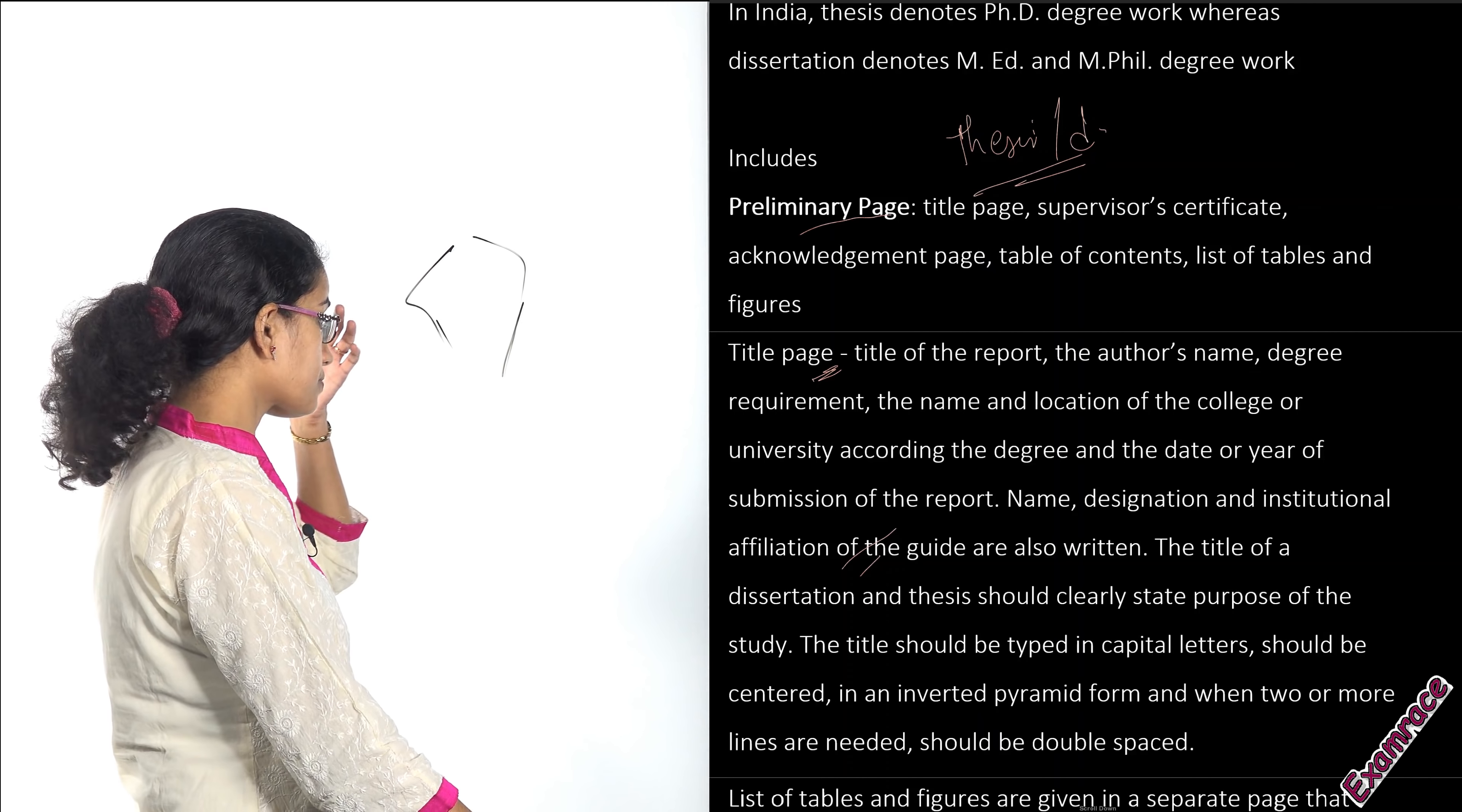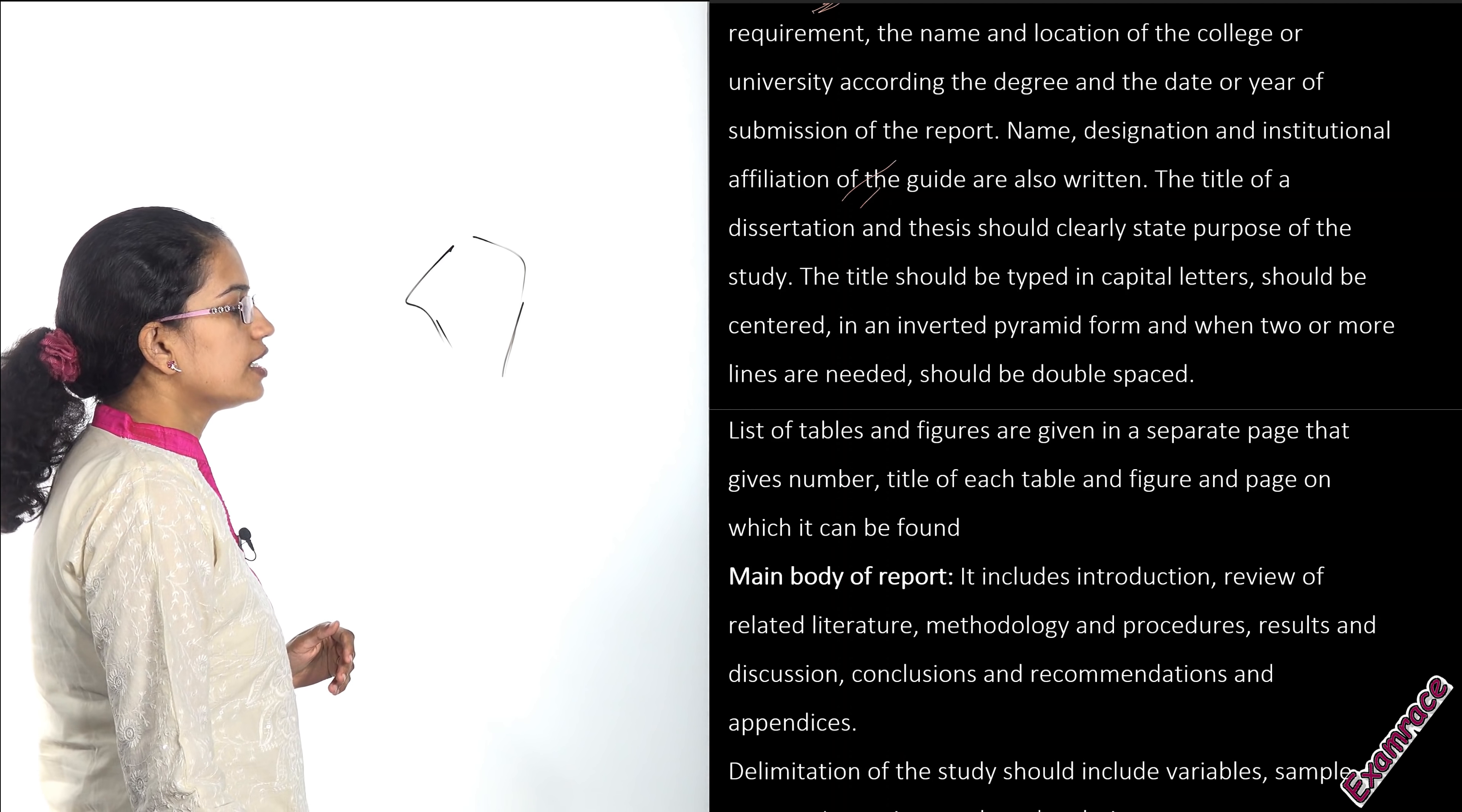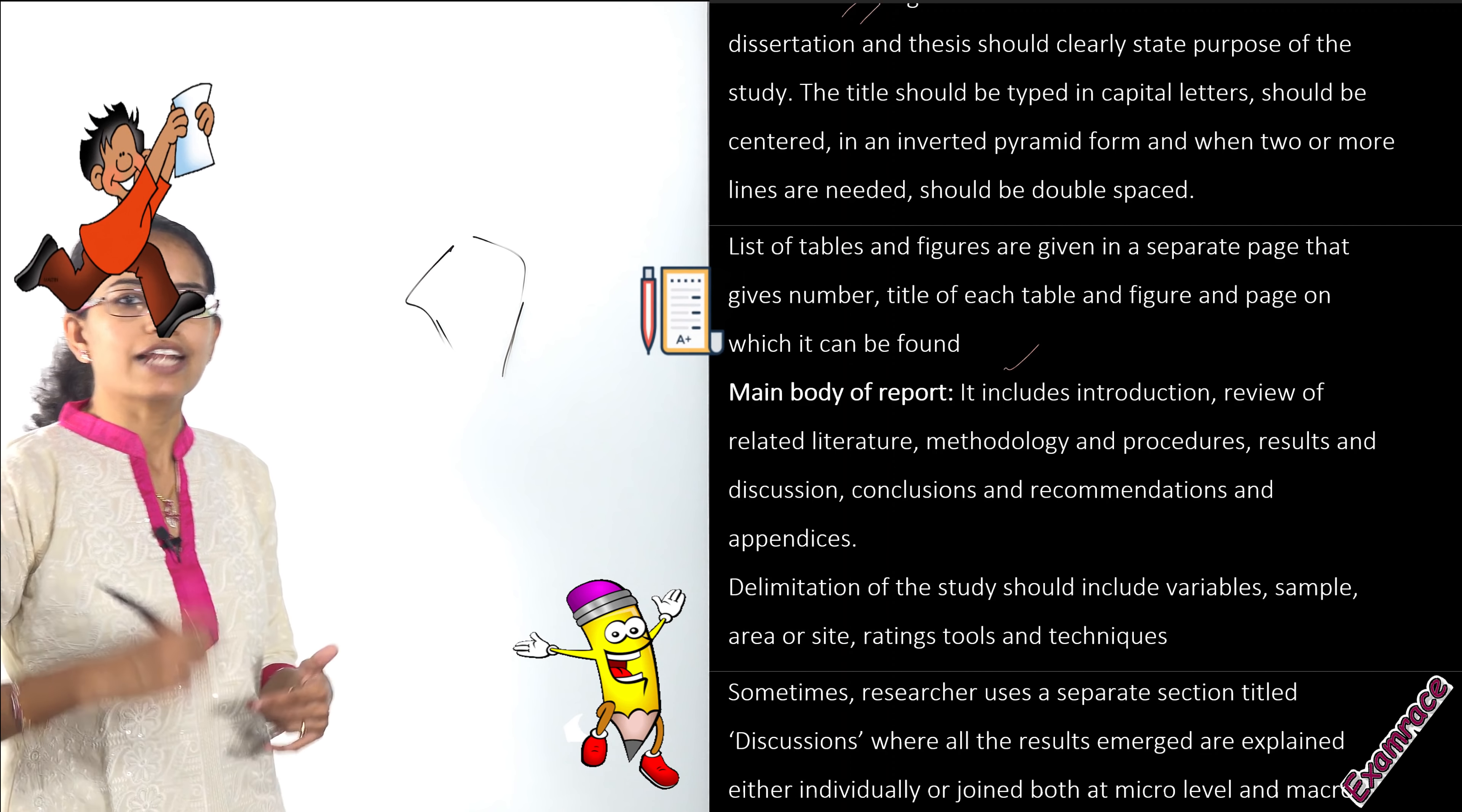Then you have the list of tables and figures which are given on a separate page with the numbers and corresponding pages on which they could be found. Then you have the main report which includes the introduction, the research question, the review of literature, the methodology, the results, discussions, and the conclusions and recommendations.